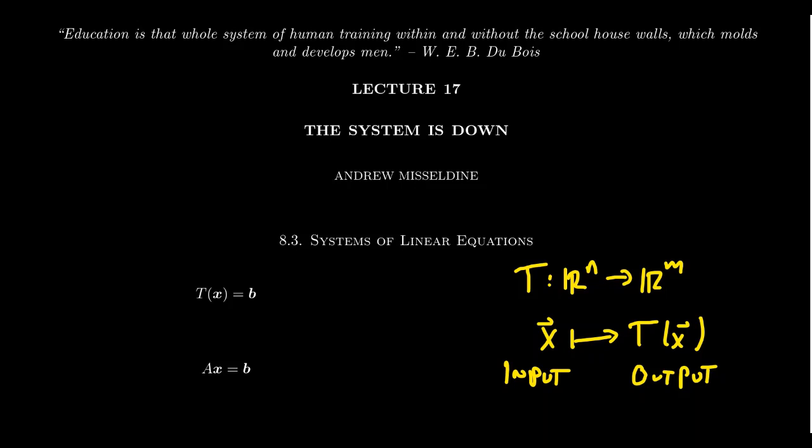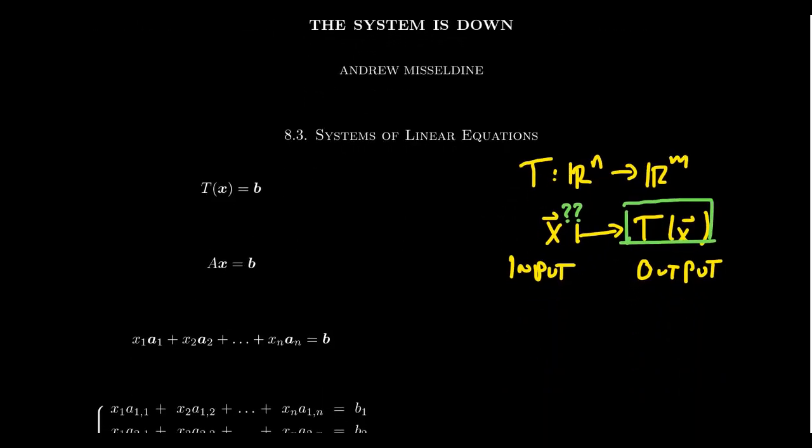But what if we want to go the other way around? What if we know the output? What input, if any, actually maps onto that point? That's the question we want to investigate right now. So suppose we have some vector b, and so this will belong to the codomain R^m. So b is some vector in the target space, and we're curious, is there some vector x which if applied to the transformation T gives us that specified vector b.